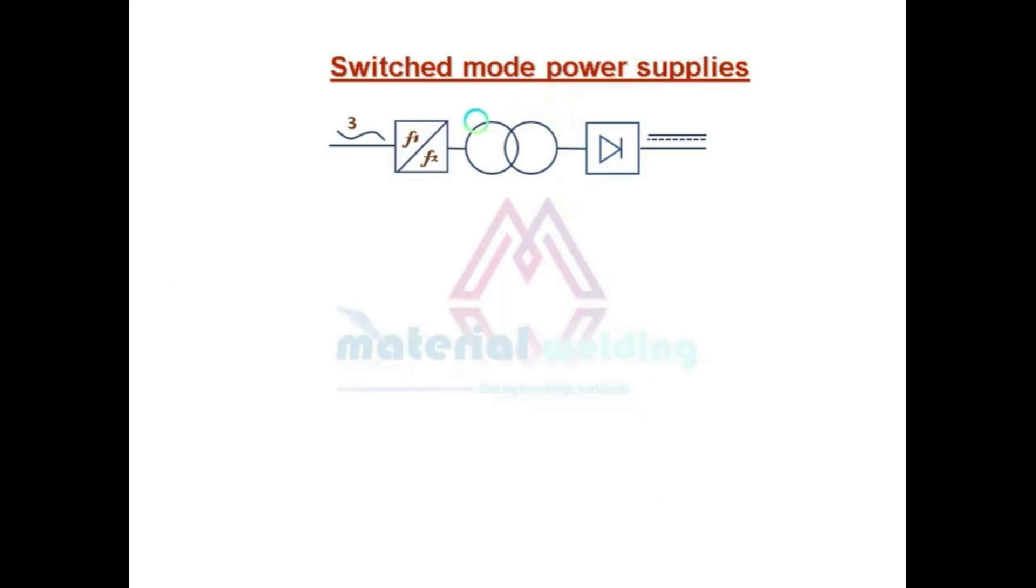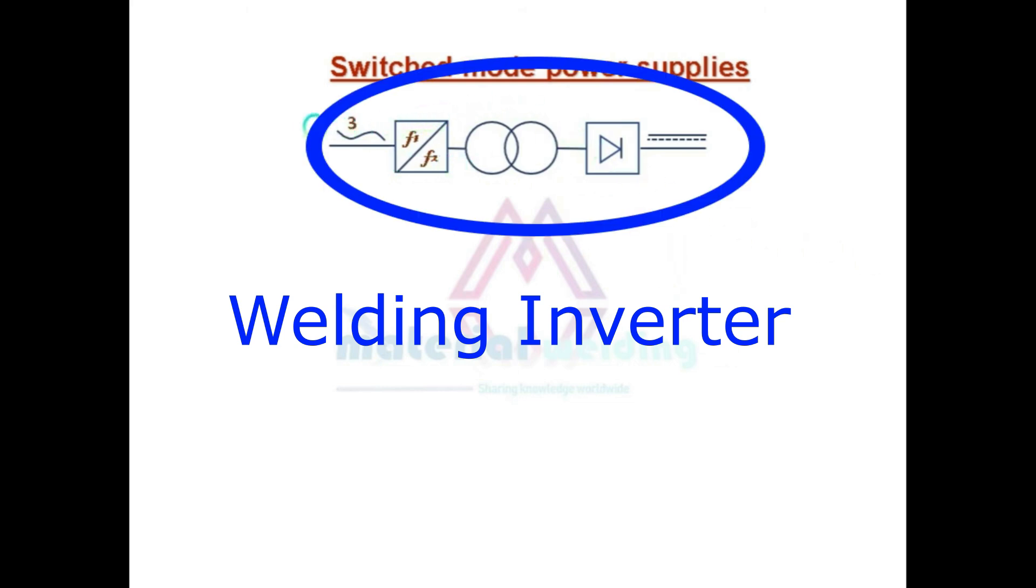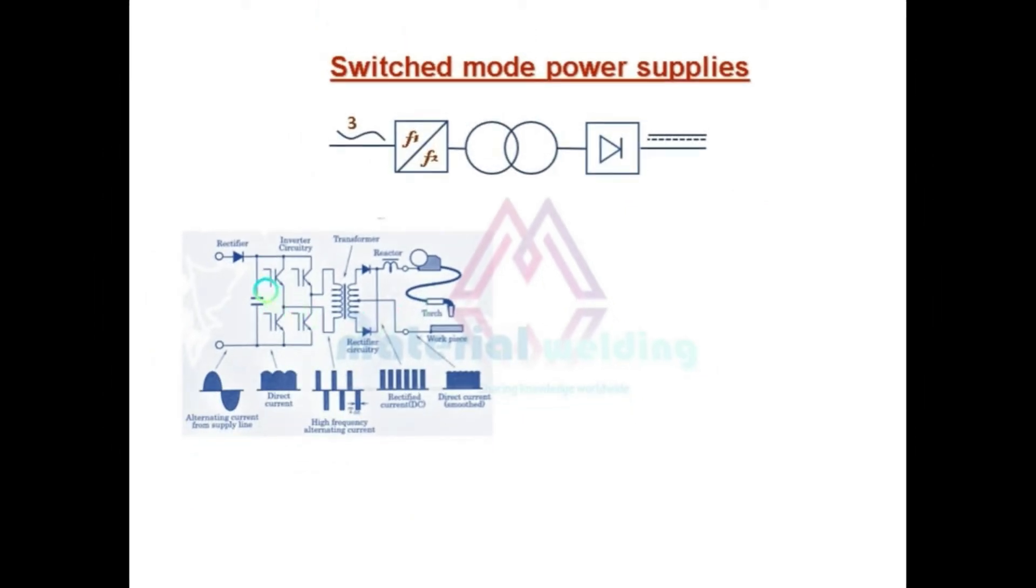Moving to next type of welding power sources, which is switched mode power supply, also called inverter-based welding machines. This is the symbol for such type of welding machines. The switched mode type power source does not have any heavy size transformer because as we can see here, input AC is first converted to DC using rectifying devices at the primary, so they are also called primary clocked power source.